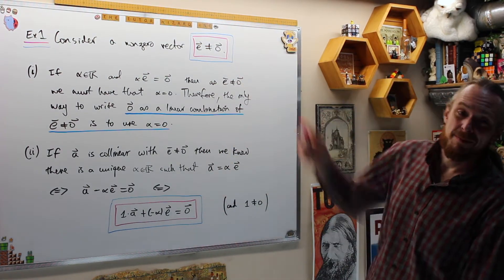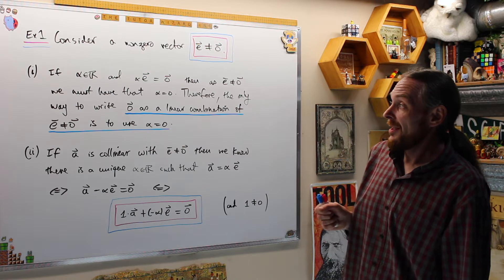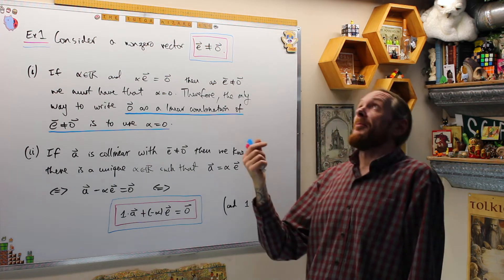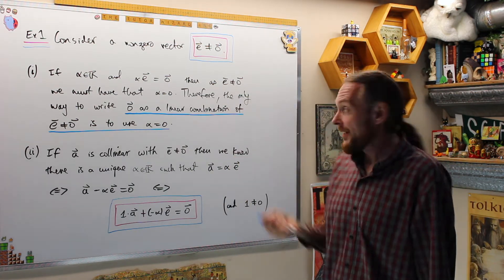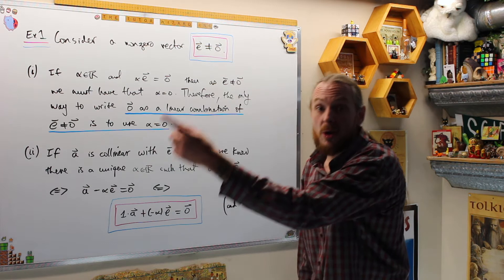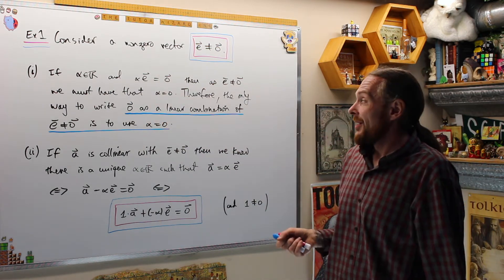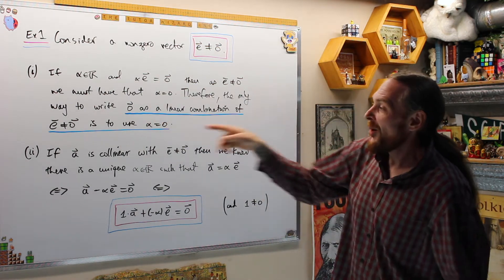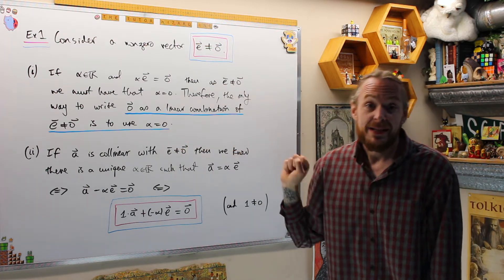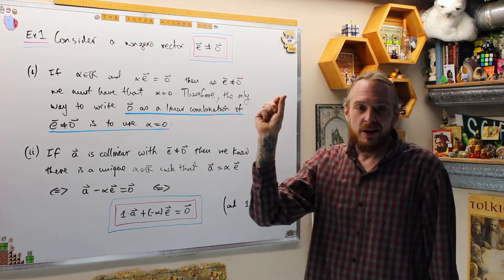Example 1: consider some non-zero vector e. If α is any real number and e is not zero, and α times e gives us the zero vector, then from video 3.2.1, property 5 says that if a product α times a vector is zero, then either the vector is zero or the number is zero. Because we're assuming our vector is not zero, that says α must be zero. Therefore the only way we can write zero as a linear combination of this non-zero vector is to have α equals zero.